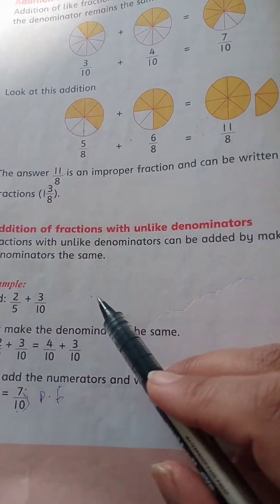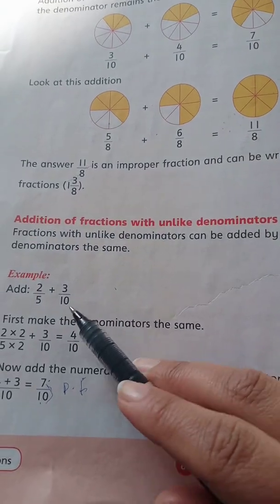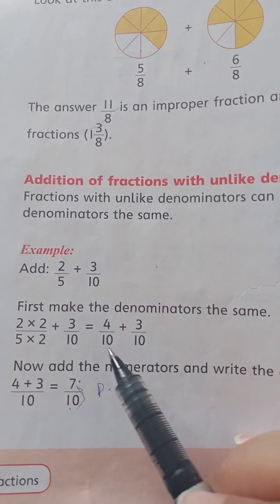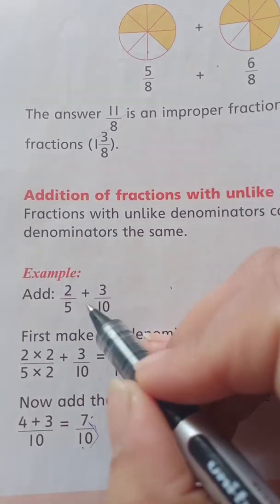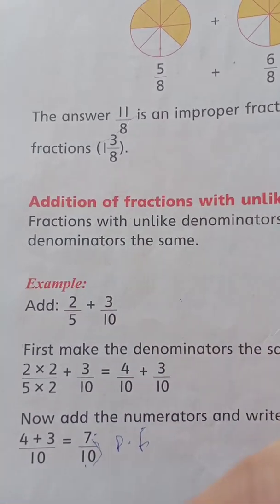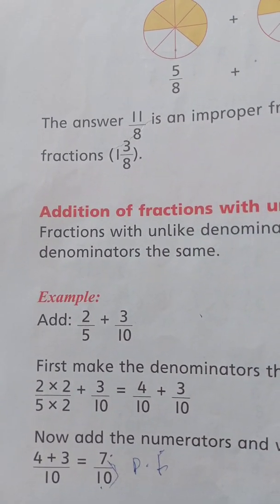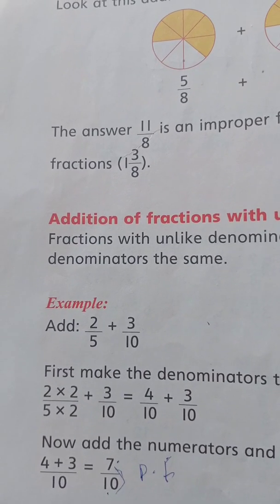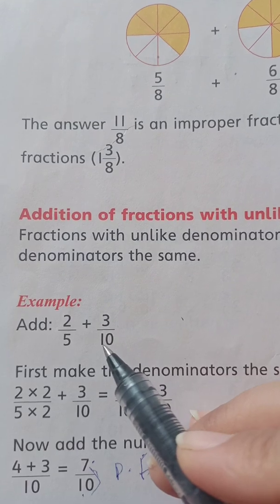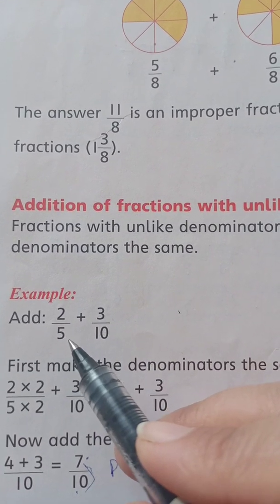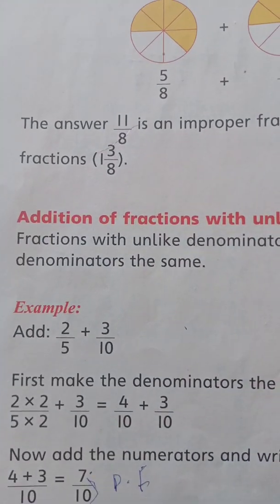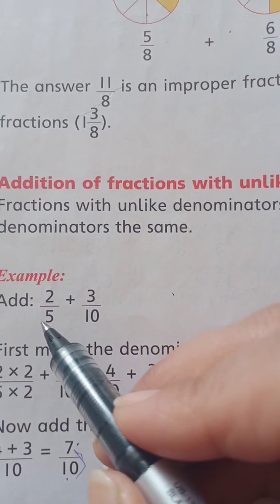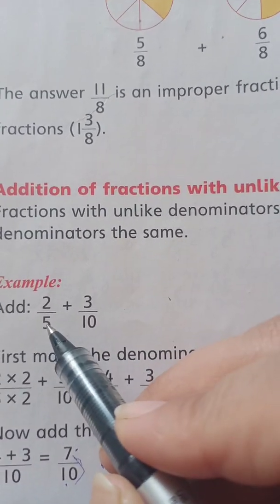Unlike fractions can be added by making the denominators same. In ko hum add kar saktay hain denominator ko same banake. Example dekhen: 2 by 5 plus 3 by 10. Pehle denominator ko same banayenge. Jab bhi aapke paas do ya do se zyada fractions add ya subtract ho rahi hon, denominators ka LCM lena hoga. Yahan ek ka denominator ten hai, doosre ka five — toh directly pata chal raha hai: five ko ten bana saktay hain.